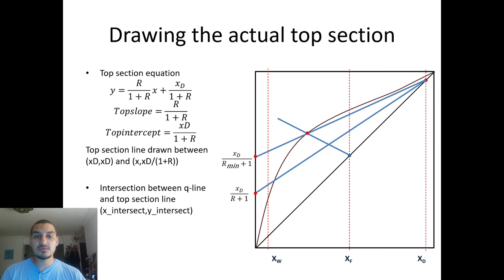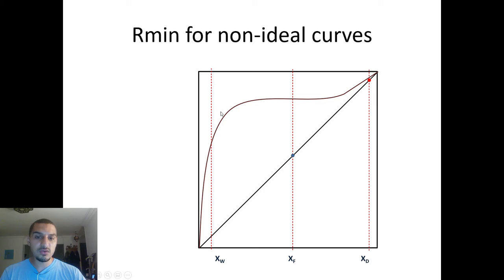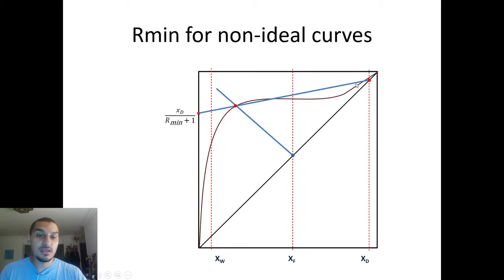However, this is not the case for all systems. There are some systems like the one shown here, which we did the fitting for in the previous video. That's why I needed to do the fitting first — to get an equation that describes this difficult curve shape. In such a case, if you try to get R_minimum the same way using the q-line intersection and pinch point, then connecting the pinch point to the xD line, you would get what appears to be the R_minimum line — but this is actually totally wrong.